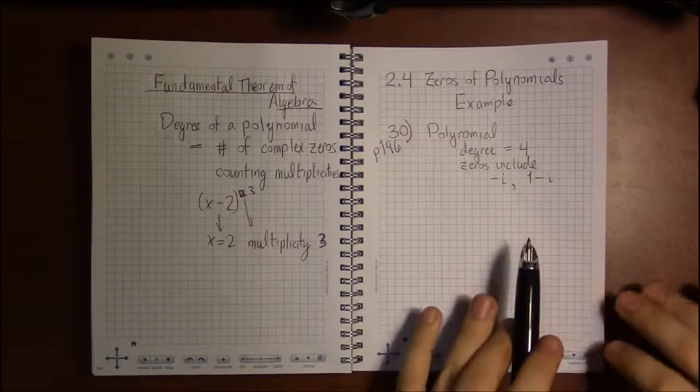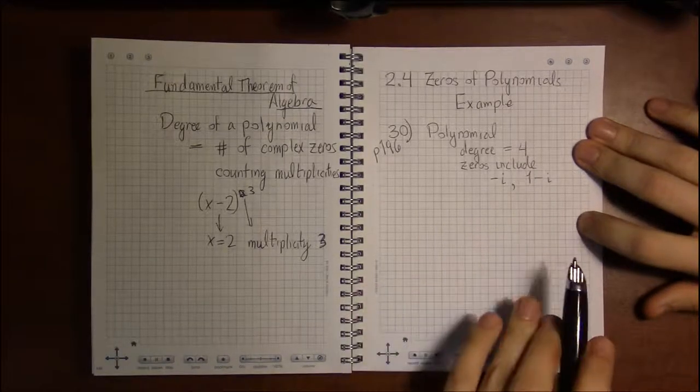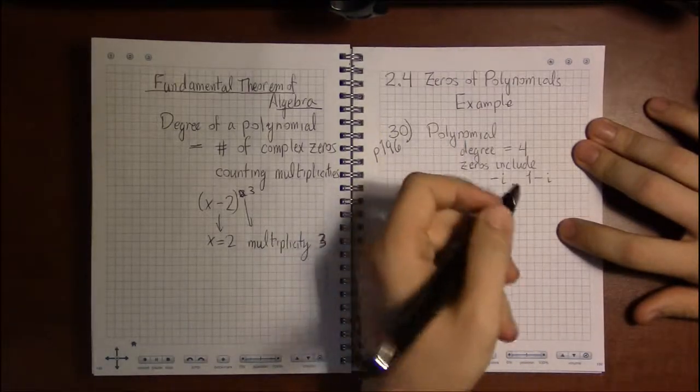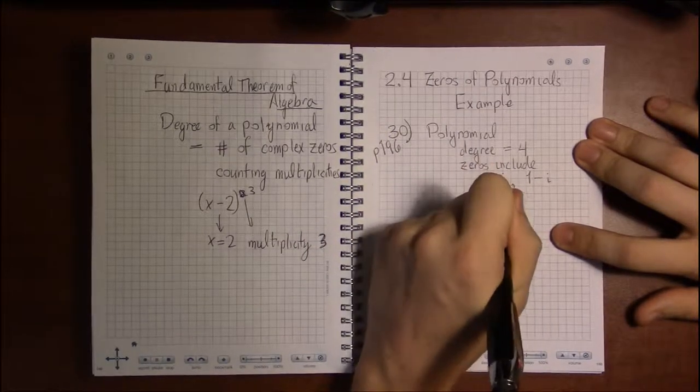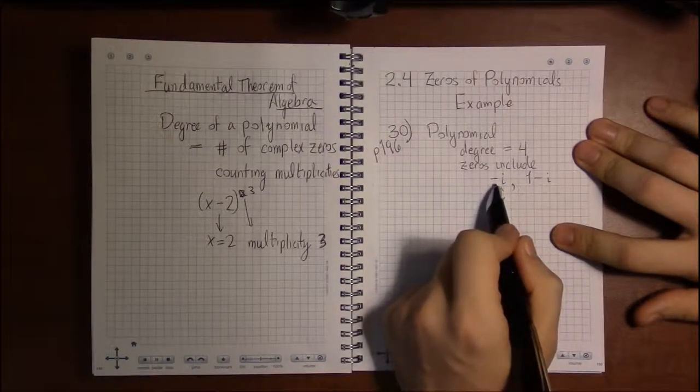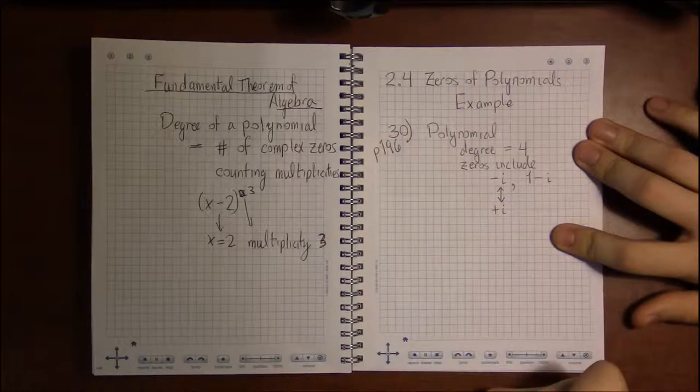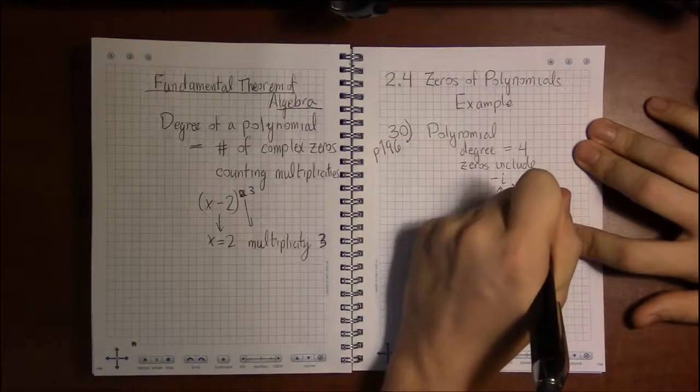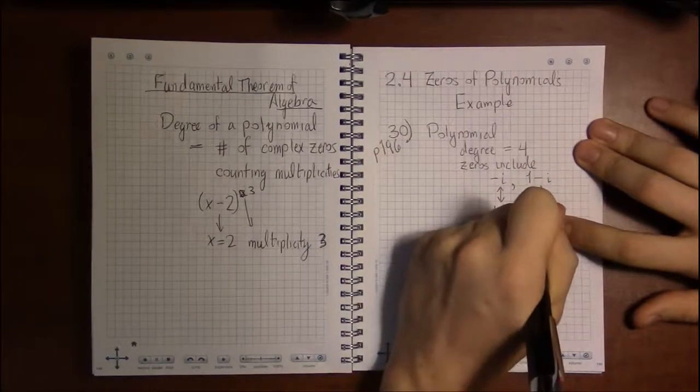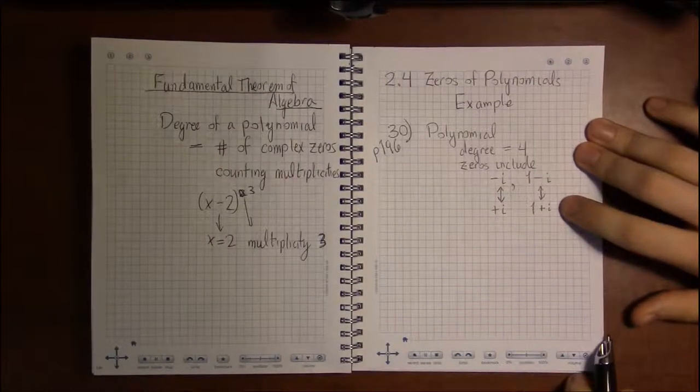The Conjugate Pair Theorem applies: if minus i is a root, then its conjugate plus i must also be a root, and if one minus i is a root, then so must one plus i be a root as well.